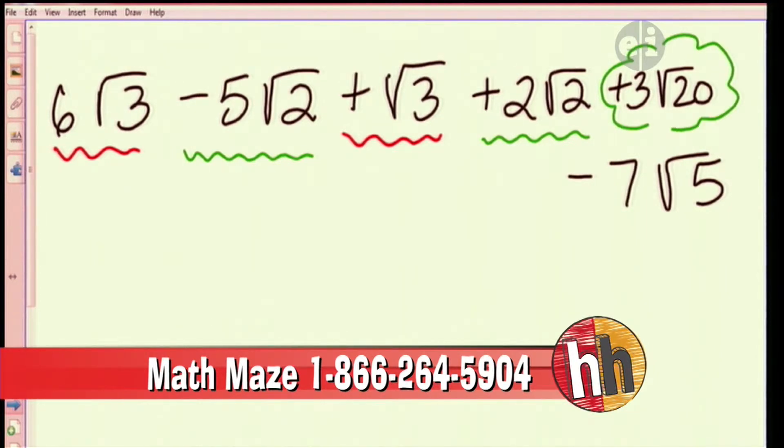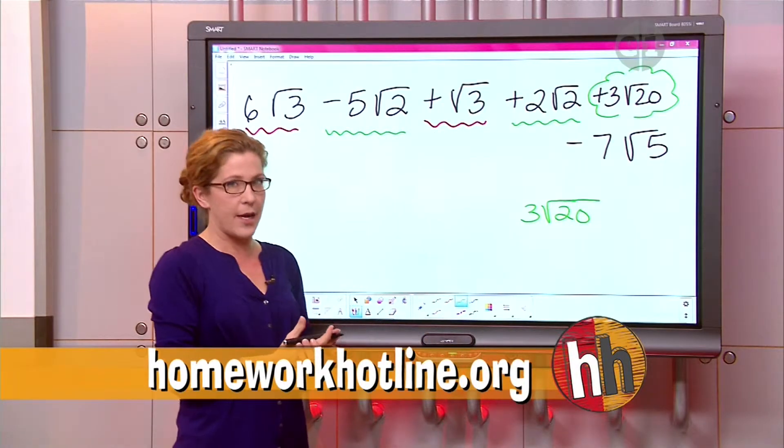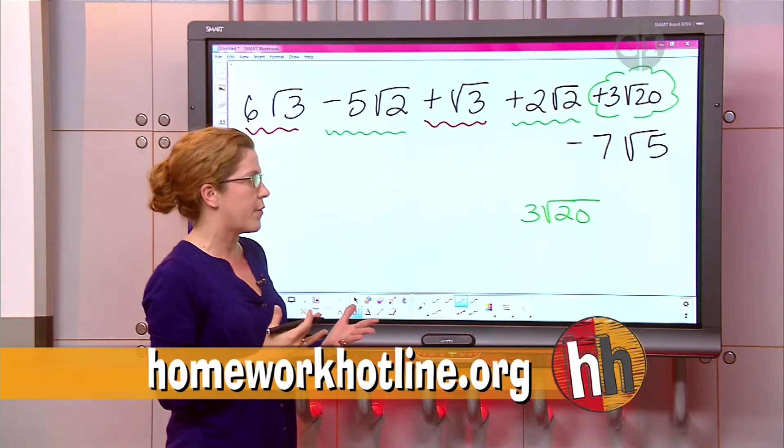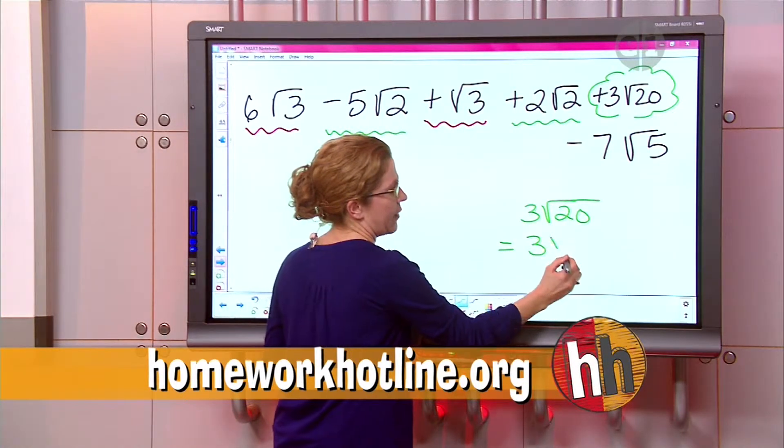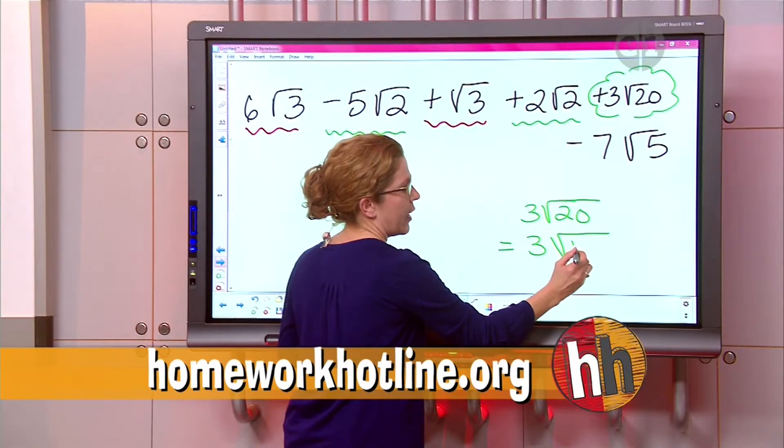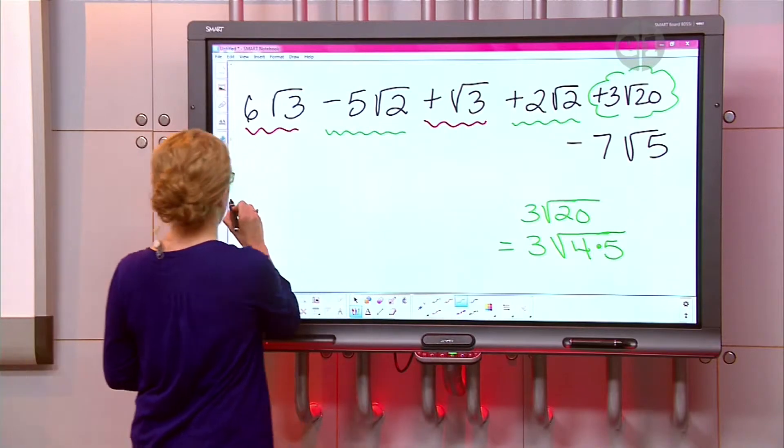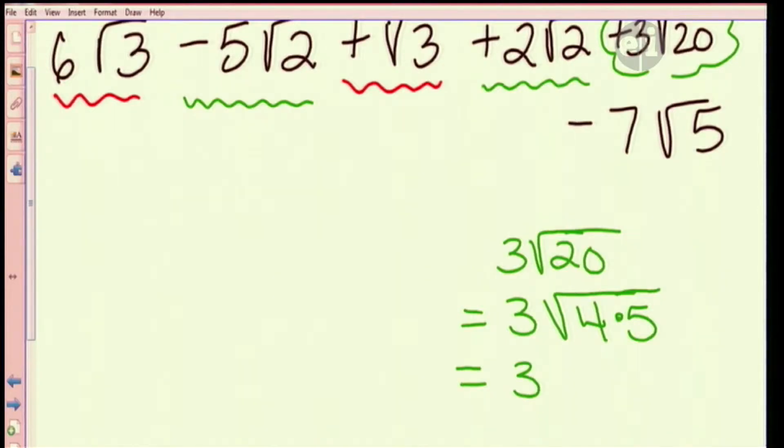So let me kind of go down here to the bottom and let's work on three radical twenty for just a second. Let me get rid of that. Okay. All right. So we have to break down that twenty basically, right? Yeah. All right. So can you think of some factors that will give me twenty? Yeah. Four and five. Okay. So let me rewrite this. I'll have three and then I'll open up my radical and I'll write four times five. How's that? Yes. All right. Good. So now let's go ahead and can I do the square root of four?